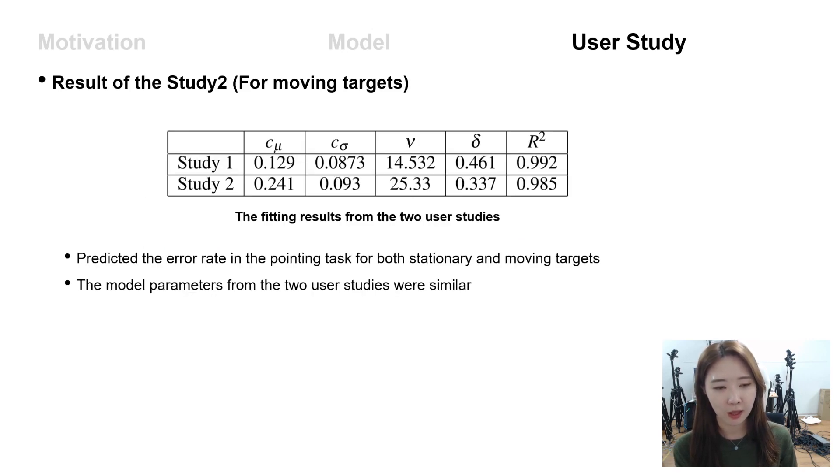We could predict the error rate in the pointing task for both stationary and moving targets. Also, the parameters from study one were very similar to the values from study two. That means the planning and execution of click action is performed with the same cognitive motor process, regardless of target movement.